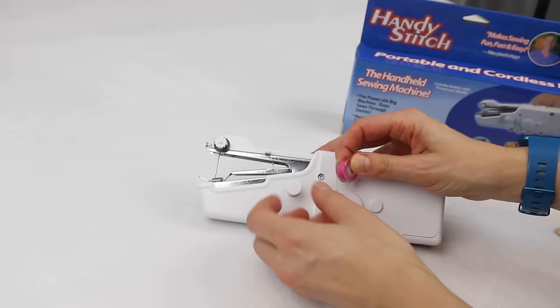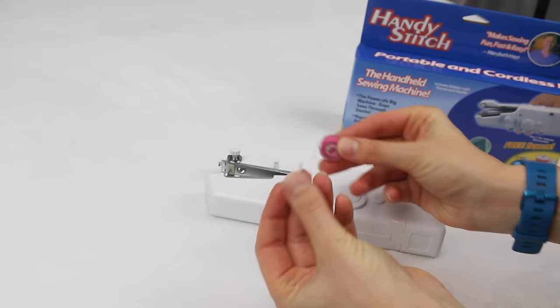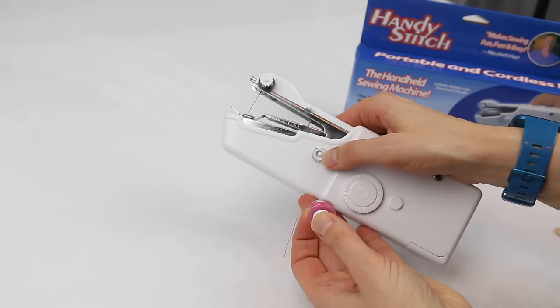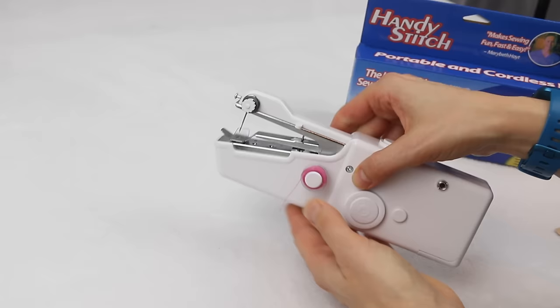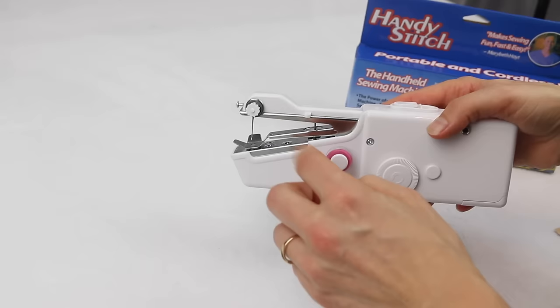So I'm going to put my pin through the bobbin of thread there and I've got my spring on there. Now this comes loose so be careful not to drop it because it is hard to find on a floor. I'm going to push that pin into that spot there. It doesn't really matter which way the thread is coming off the bobbin.